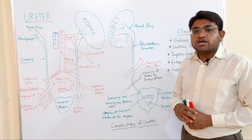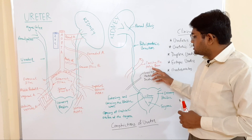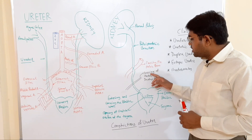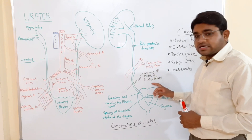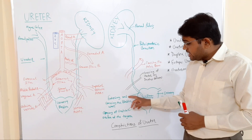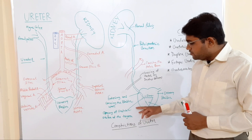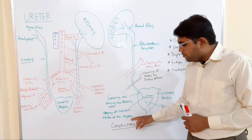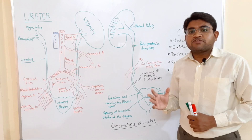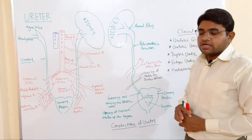The fifth and final constriction is at the opening of the ureteric orifice at the trigone. So the five normal constrictions are: first at the pelvi-ureteric junction, second at the pelvic brim, third at the crossing by the ductus deferens, fourth at entry into the bladder wall, and fifth at the trigone opening.